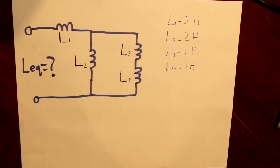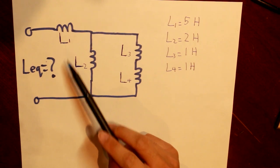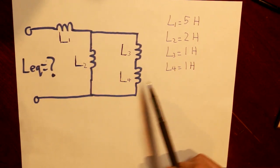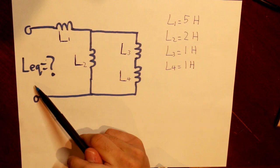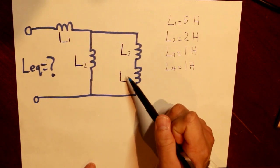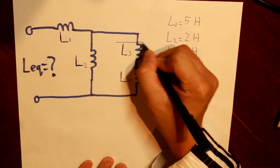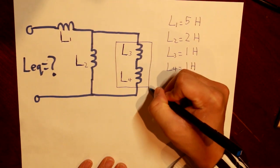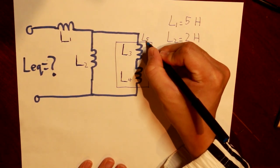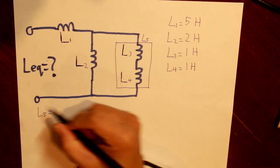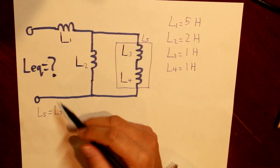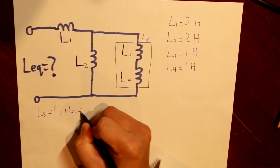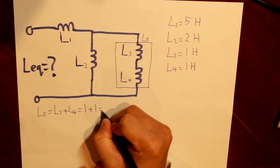Moving on to the inductance numerical example. We have the same circuit, but now with inductors instead of capacitors. First, L3 and L4 are in series, so we name their combination L5. L5 = L3 + L4 = 1 + 1 = 2 H.